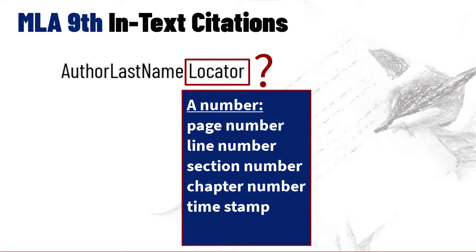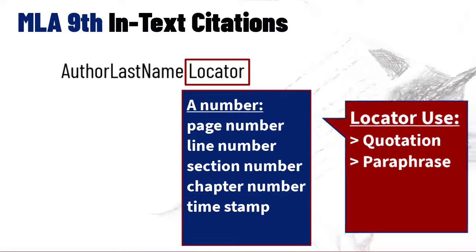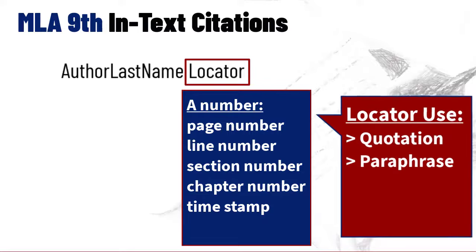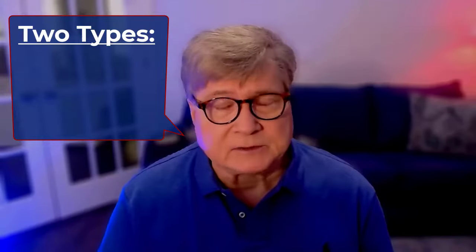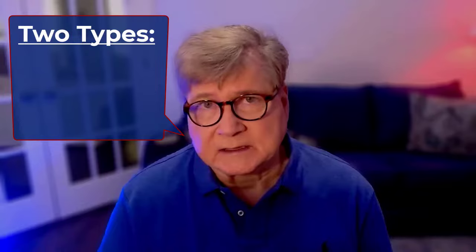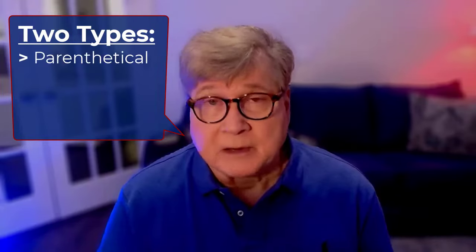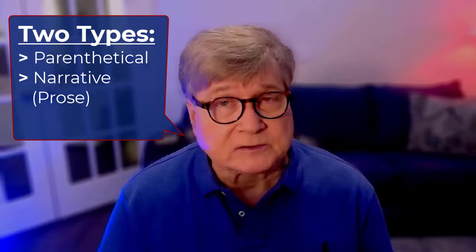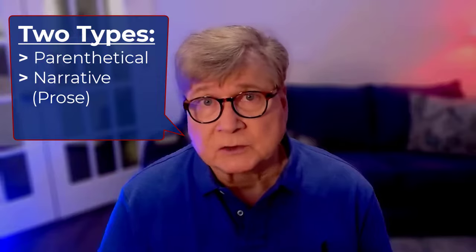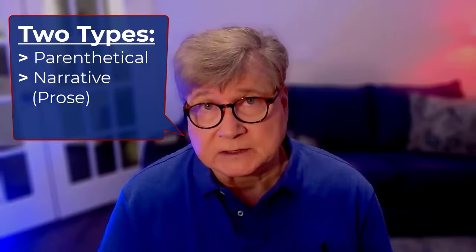If your source doesn't have one of those numbers, don't put anything as a locator. Next point: the only time you use a locator is when you're either quoting directly from a source or paraphrasing a specific passage. Now, let's define the two types of in-text citation: the parenthetical citation and the narrative citation, also called the prose citation.